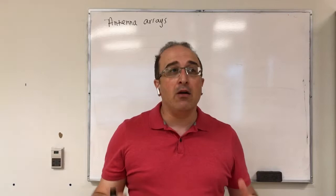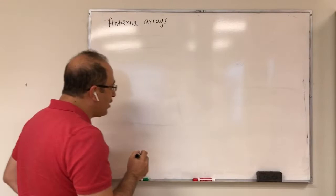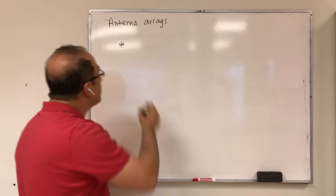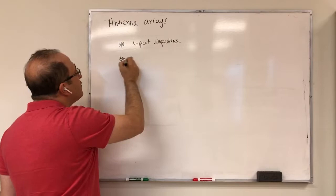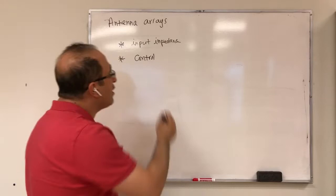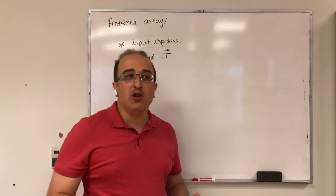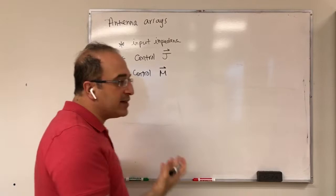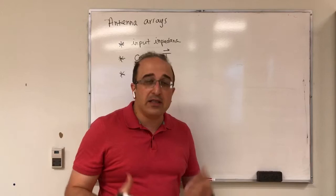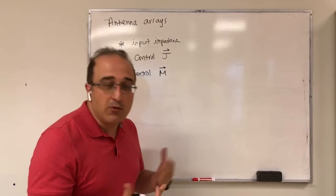Let's think about what we've learned so far. In antenna design, three parameters are very important. First, input impedance — you want to be able to deliver power to the antenna. Second, we need to control the current distribution on the antenna, for example on a dipole we get two in-phase currents. Third, controlling the magnetic current, as we saw in the case of a loop antenna.